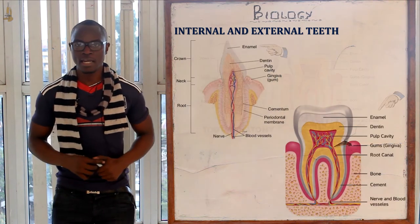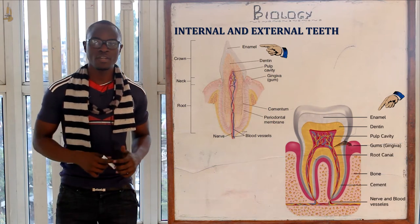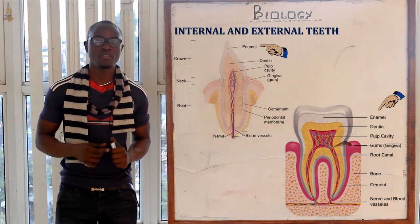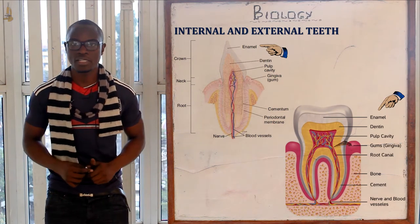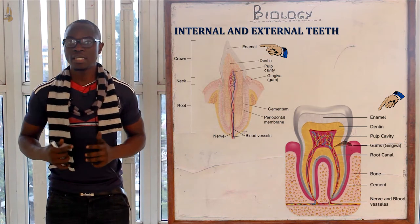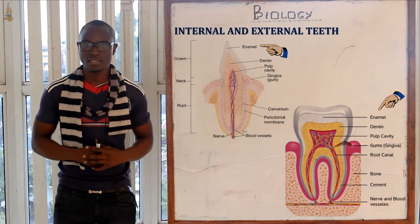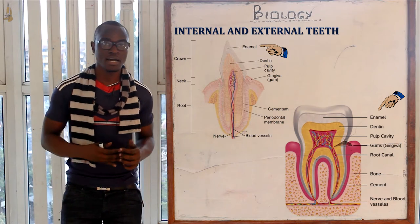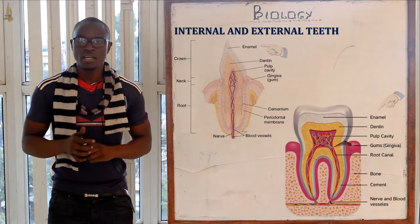Let's look at the enamel. It is mainly the non-living layer made up of calcium phosphate and carbonate. It mainly protects the inner delicate parts and is also used for cutting and grinding of food.